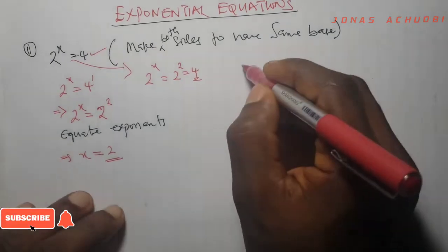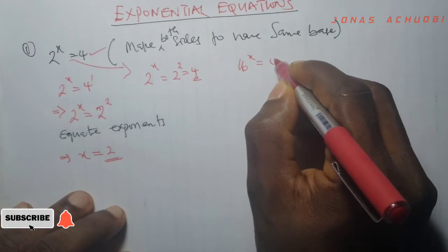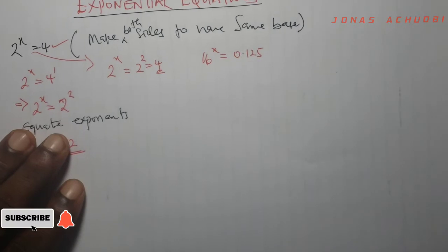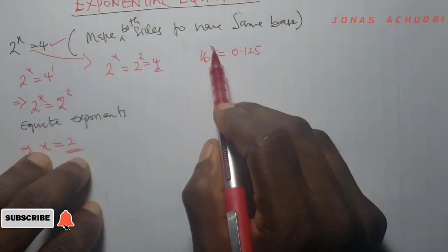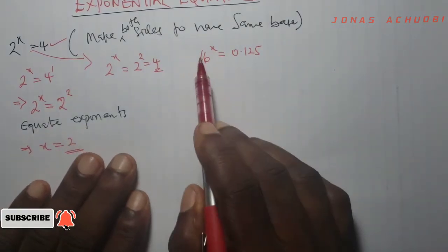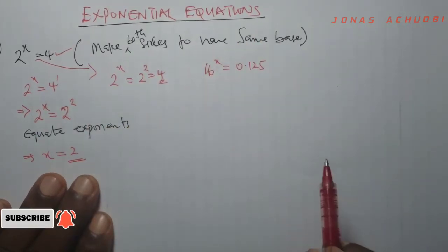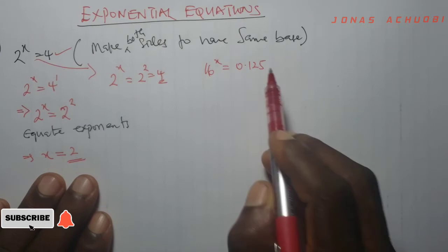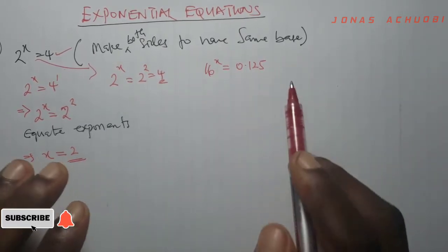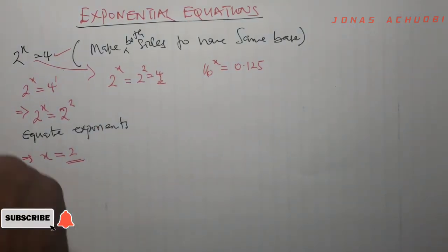Let's look at another example. Let us solve 16 raised to the power x equal to 0.125. This is another example of an exponential equation because the unknown x appears as some power of a base 16. The idea is the same — there are two terms here, and we simply try to make both sides have the same base. Once we express both sides in terms of the same base, we equate the powers and that will be all.